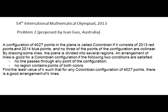An arrangement of lines is good for a Colombian configuration if the following two conditions are satisfied: no line passes through any point of the configuration, and no region contains points of both colors. Find the least value of k such that for any Colombian configuration of 4027 points there is a good arrangement of k straight lines.